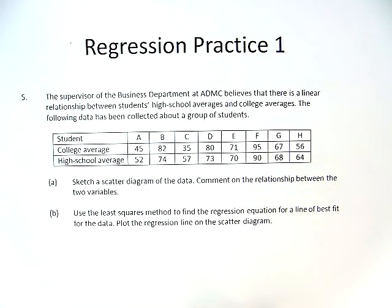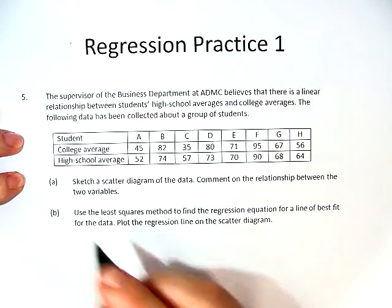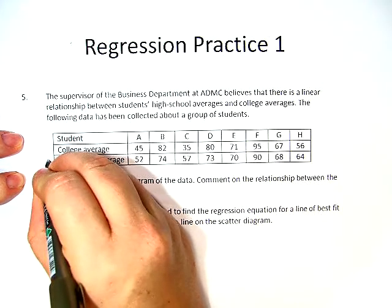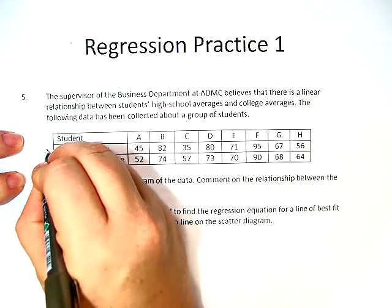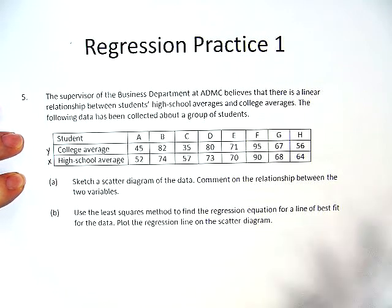The following data has been collected about a group of students. Earlier we talked about independent and dependent variables. We decided that the independent variable was the high school average, and the dependent variable was the college average. So we're actually going to put these in.